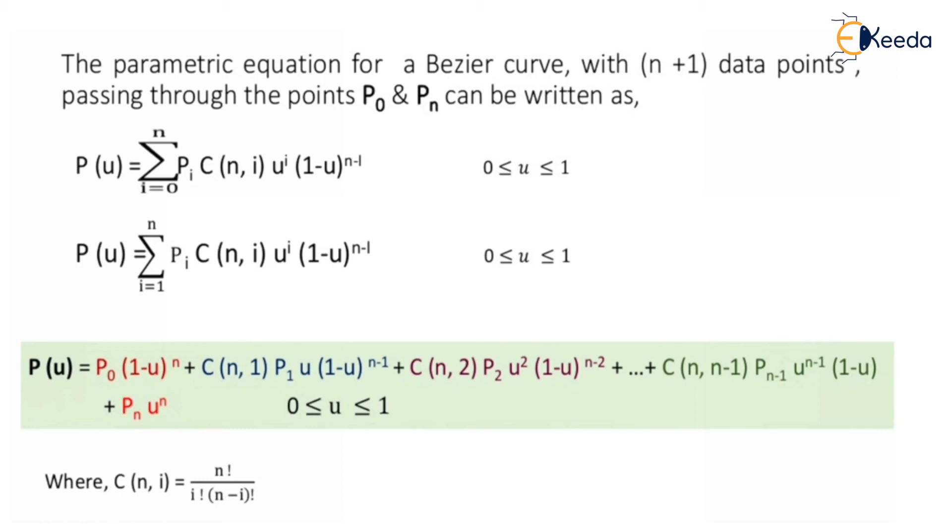So P(u) will be written in the form of, after taking computation: P(u) equals P0(1 minus u) raised to n plus C(n, 1) P1 u (1 minus u) raised to n minus 1 plus C(n, 2) P2 u squared (1 minus u) raised to n minus 2 plus so on, plus C(n, n minus 1) Pn minus 1 u raised to n minus 1 (1 minus u) plus Pn u raised to n, where 0 ≤ u ≤ 1.